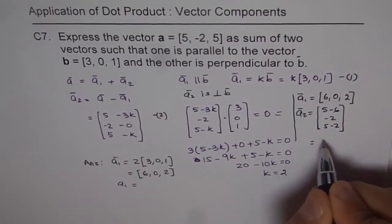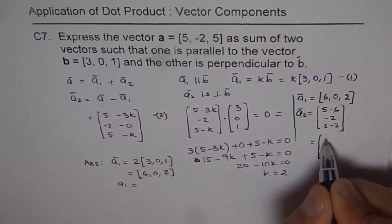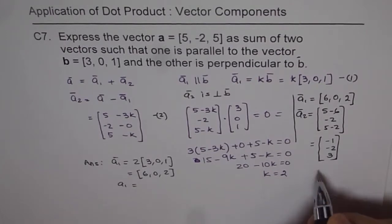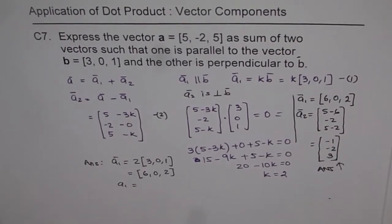That is, a₂ is equal to, 5 minus 6 is -1, -2 and 3. So that is a₂ for us, and that is the answer. I hope you find this example interesting. Share your comments with us. Thank you.